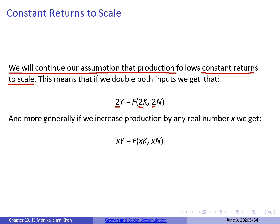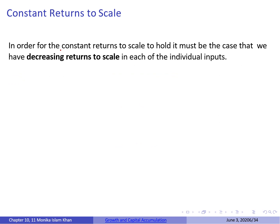In order for the constant returns to scale assumption to hold for both inputs together, it must be the case that we have decreasing returns to scale in each individual input. This means that if you only increase one input — say you only increase capital — output will still increase, but not at the same rate; it will increase at a decreasing rate.